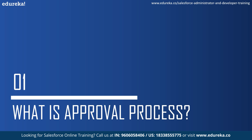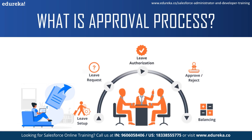Let me explain the approval process in a very simple way by taking an example. Assuming this is Neha, as you can see on the left-hand side in the diagram, she has applied for a leave — it can be either a casual or a sick leave. This application will go to the leave authorization, where a manager will either approve or reject the request. Depending on the approval, her leave balance is updated accordingly.